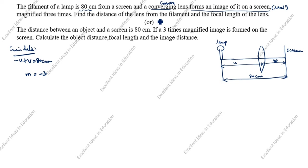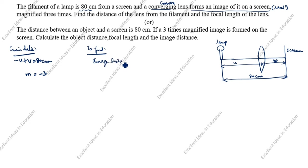We need to find: the distance of the lens from the filament, the image distance, and the focal length of the lens — that is, U, V, and f.